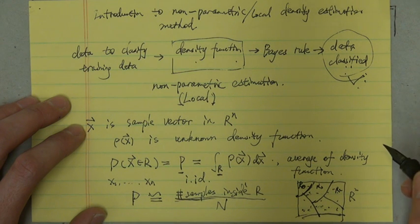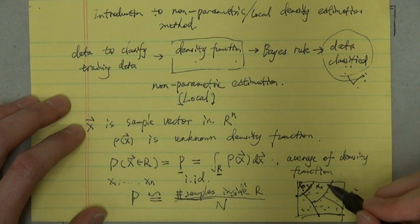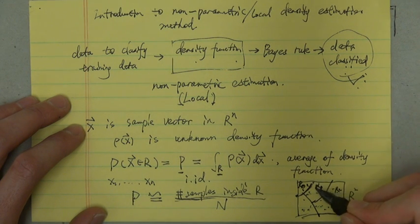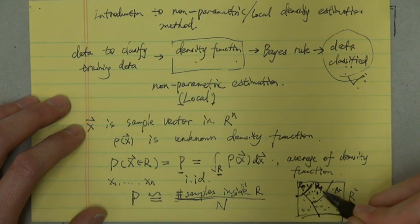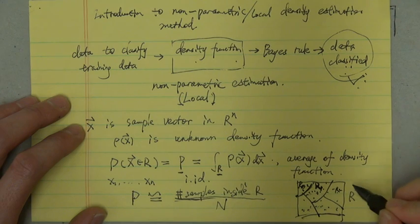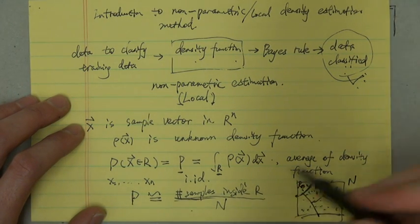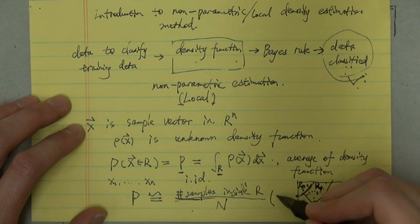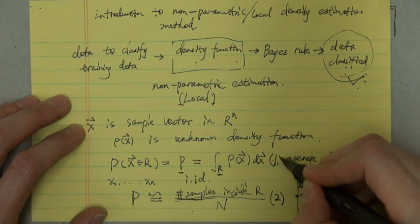If we want to know the probability x belongs to R₁, we can count the number of samples inside R₁ divided by the total number of samples n. Then we can use this equation to represent this probability. We call this equation 2 and this is equation 1.